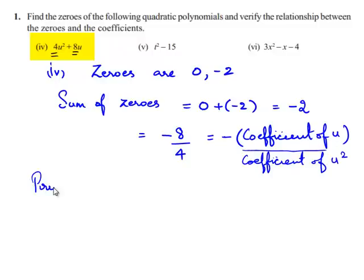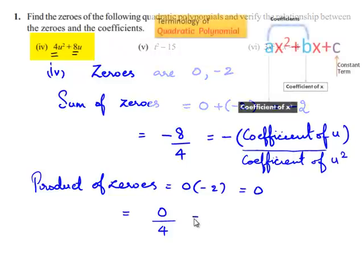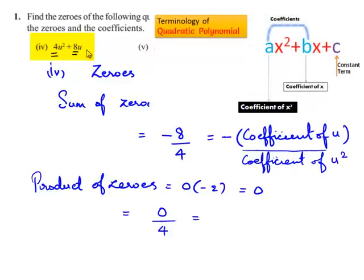Now the product of zeros is 0 × (-2) = 0. This equals 0/4, and since we don't have a constant term, we can say the constant term is 0.